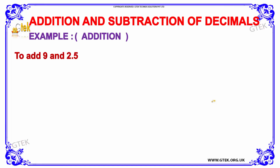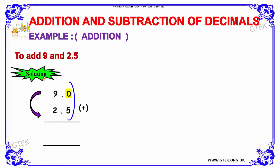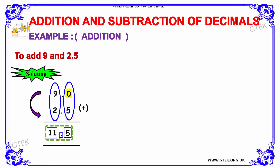Now let us move to the next example where we have the question 9, which needs to be added with 2.5. Since 9 is a whole number, it does not have any decimal. So we have filled up the empty places by inserting 0. When we add the terms, 0 plus 5 is 5. Placing the decimal point, we add 9 plus 2, that is 11. So the answer is 11.5.